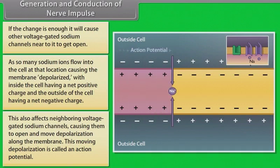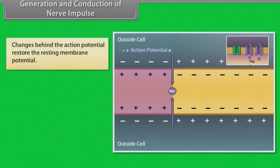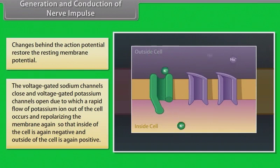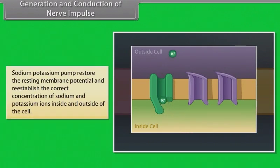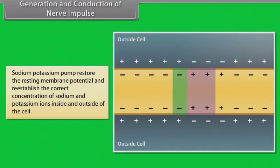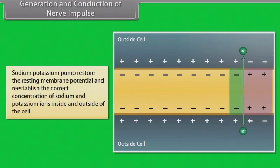This moving depolarization is called an action potential. Changes behind the action potential restore the resting membrane potential: voltage-gated sodium channels close and voltage-gated potassium channels open, causing a rapid flow of potassium ions out of the cell and repolarizing the membrane. The sodium-potassium pump then restores the resting membrane potential and re-establishes the correct concentration of sodium and potassium ions inside and outside the cell.